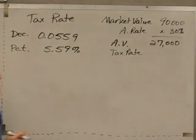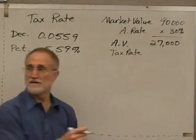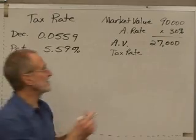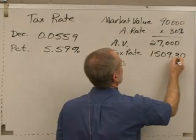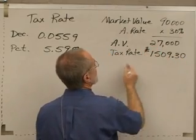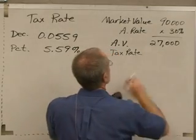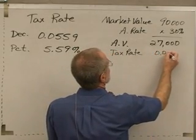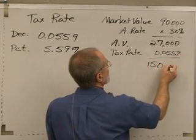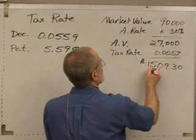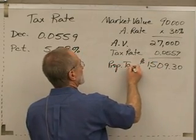Is that somewhere between $1,000 and $2,000? $1,509.30 — does that sound right? I'm seeing nods, so I'm assuming that's correct. The tax rate is 0.0559, and the actual tax is $1,509.30. So that's our property tax — that's annual, that's how much we pay every year.